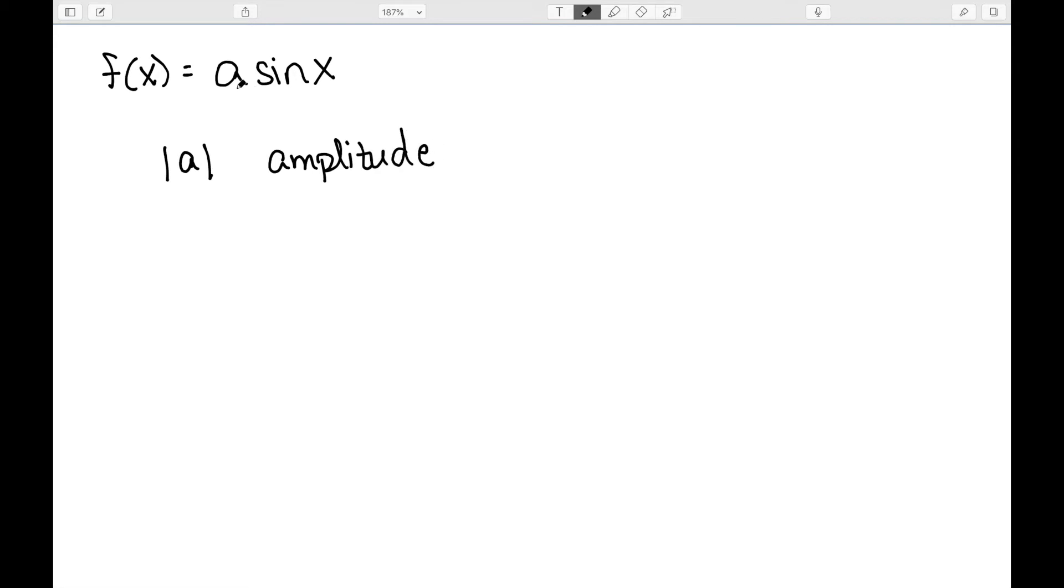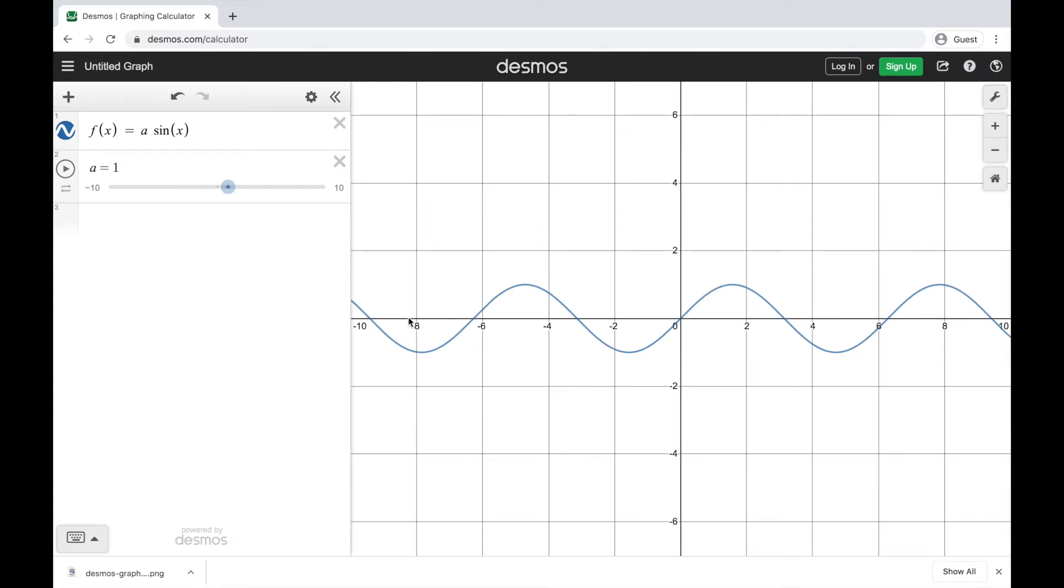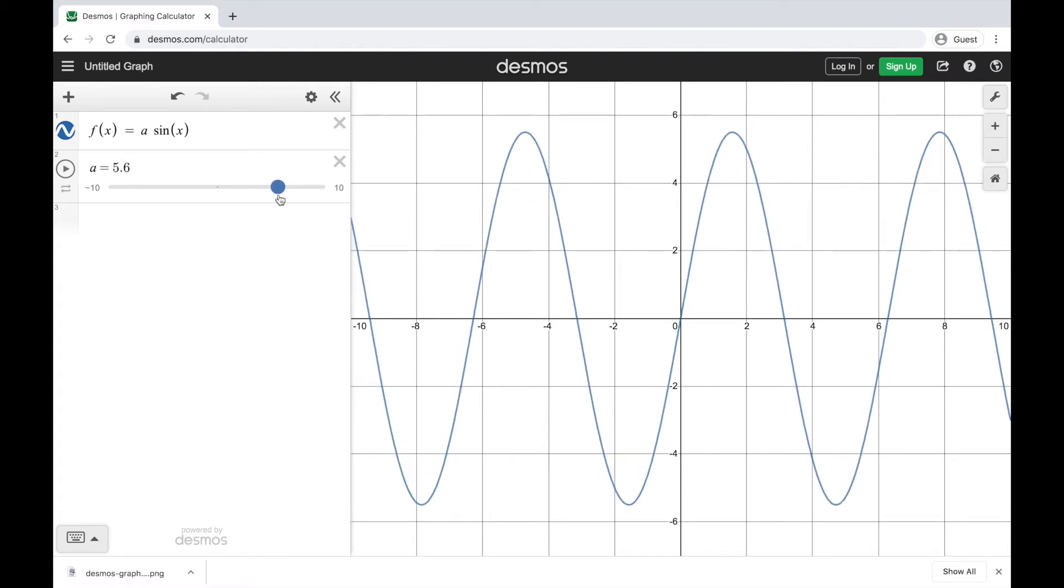So multiplying the function sine of x by a number will change the amplitude. Let's look at the graph and see what that actually does. Here I have the graph of sine x and I have this slider that will change the value of a. If I make a bigger, I can see that the height of this curve grows, so my range is changing.